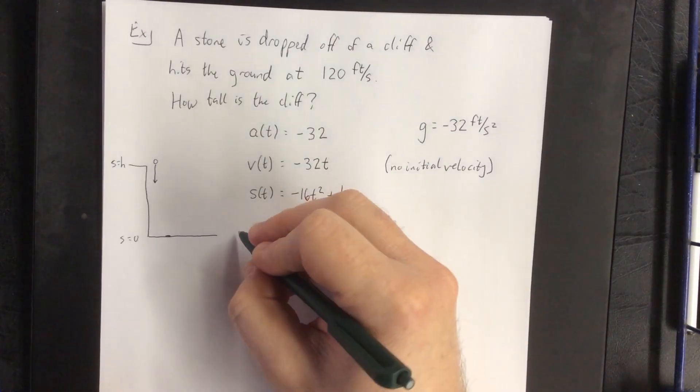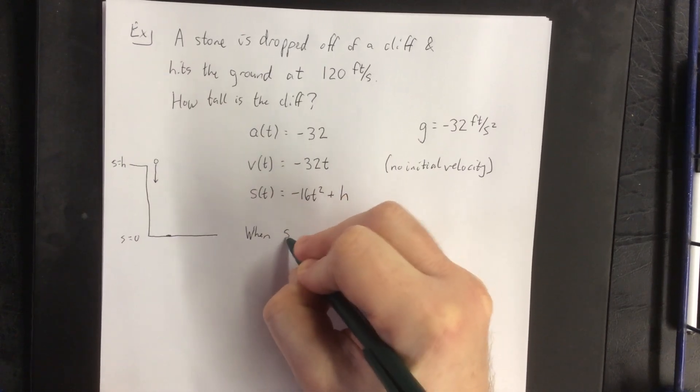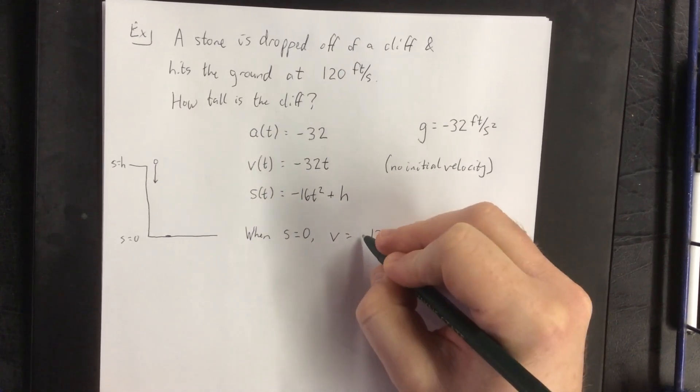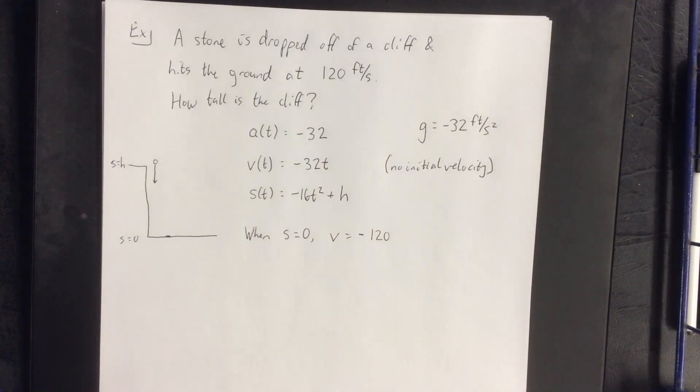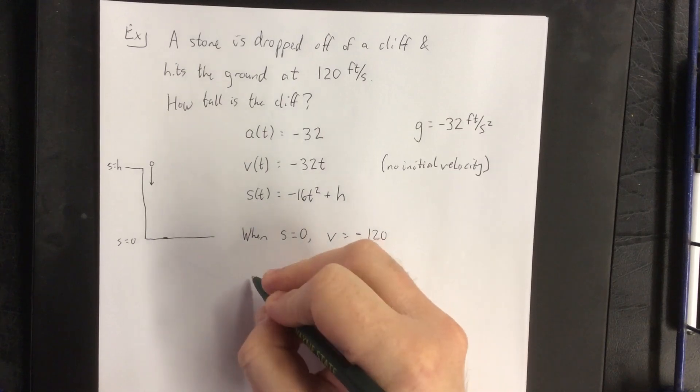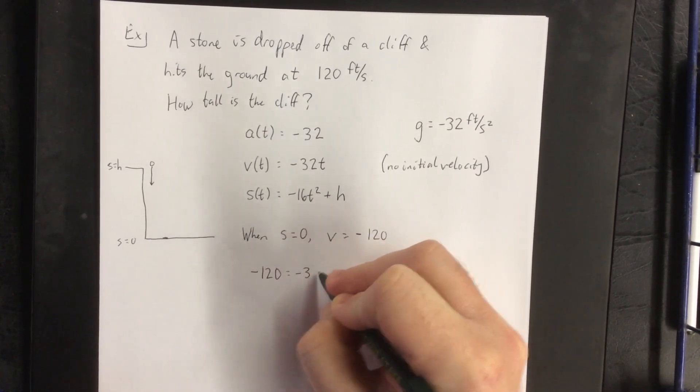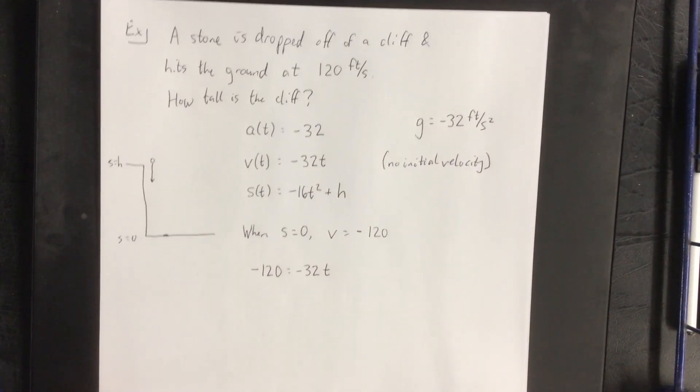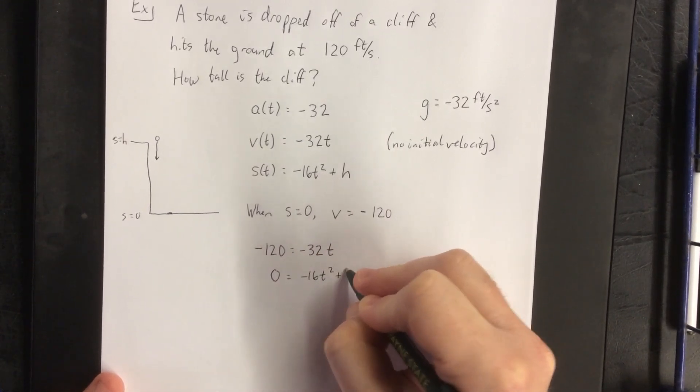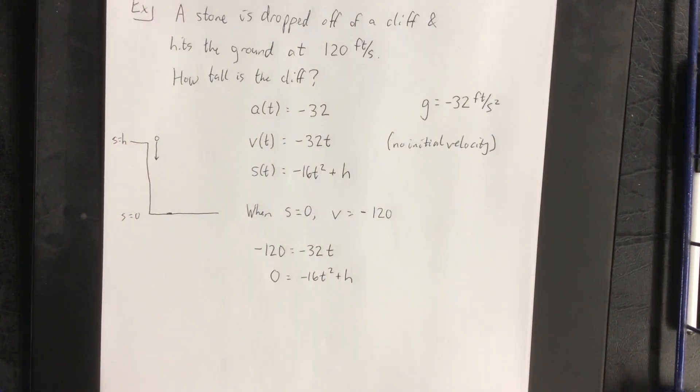Now, here are some things that we know. When it hits the ground, so when s is equal to zero, we know that the velocity is going to be equal to not just 120, but rather negative 120. This is due to the fact that because it's accelerating in the downward direction, its velocity will be negative throughout. So what I'm going to do is take my velocity function and my position function, set s equal to zero, and set v equal to negative 120. So v is negative 120. That'll be equal to negative 32t. The position will be zero. That'll be equal to negative 16t squared plus h. This sets up a system of two equations with two variables, those two variables being t and h.